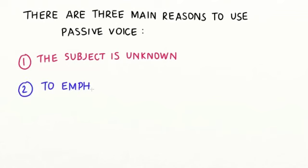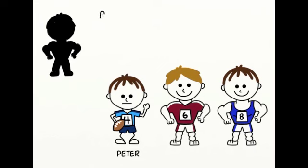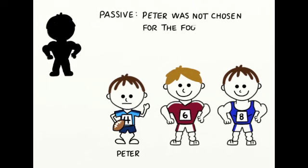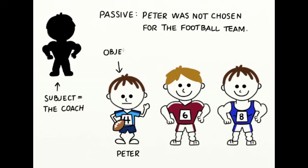The second reason we use passive voice is to emphasize the object. For example: Peter was not chosen for the football team. Here, the subject is the coach, but the coach is not important — Peter is important.